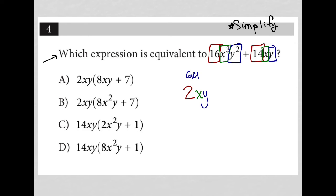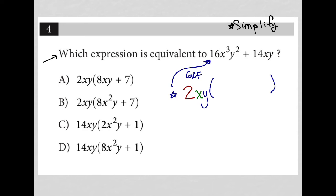Our GCF is 2xy. Now we need to recreate our original expression by filling in what goes inside the parentheses — whatever is necessary to make our factored form have the same value as our starting material. So: 2 times what is 16? That's 8. x times what is x³? That's x². And y times what is y²? That's y. So now I've recreated the first term.